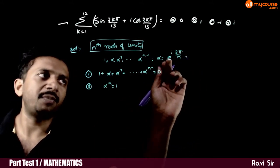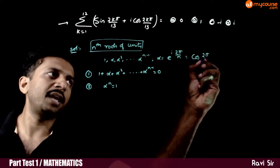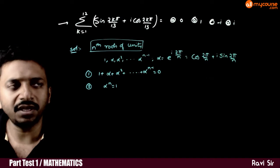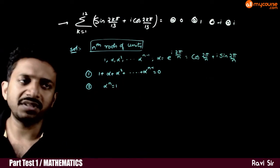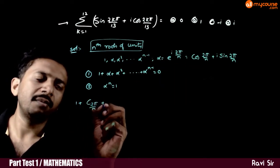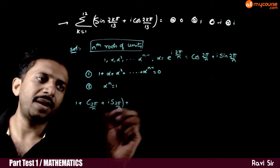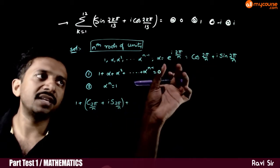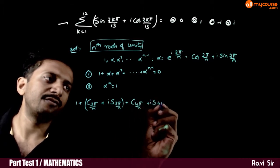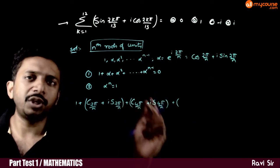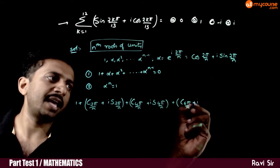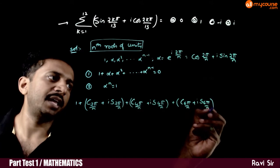Alpha equals e power i·2π/n, which is cos(2π/n) plus i·sin(2π/n). So, 1 plus alpha is cos(2π/n) plus i·sin(2π/n). Alpha squared is e power i·4π/n, which is cos(4π/n) plus i·sin(4π/n). Alpha cubed gives cos(6π/n) plus i·sin(6π/n), and so on.